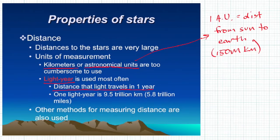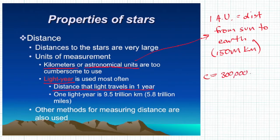Light travels very fast — at 300,000 kilometers per second. We call that C in physics, as in Einstein's famous equation E = MC². That C actually stands for the speed of light. So C is 300,000 kilometers per second, very, very fast. If you give it a whole year to travel, that's a very big distance because there are a lot of seconds in a year. We call that a light year.